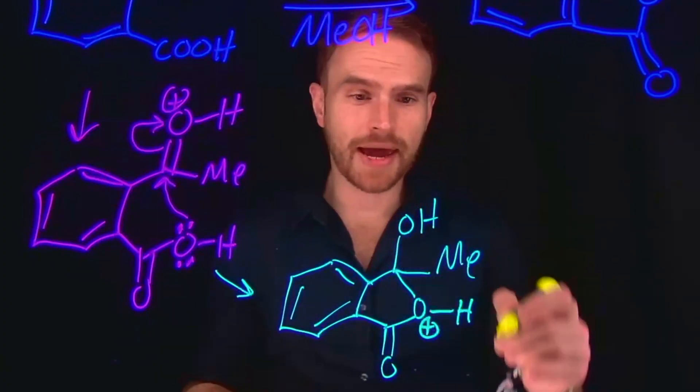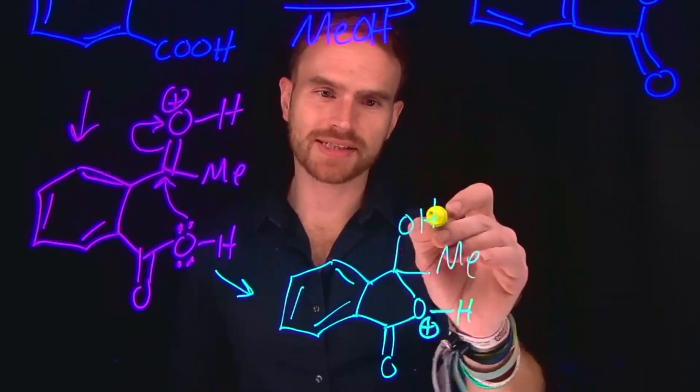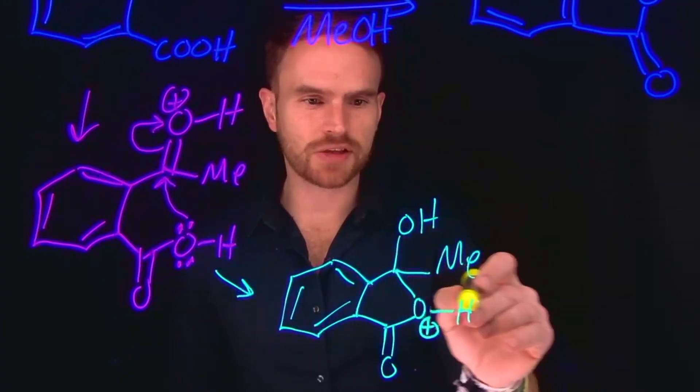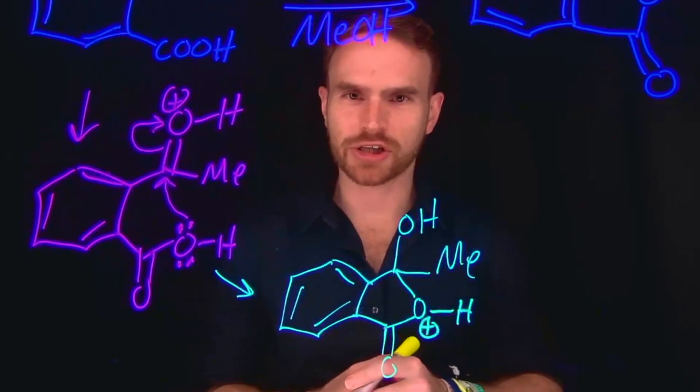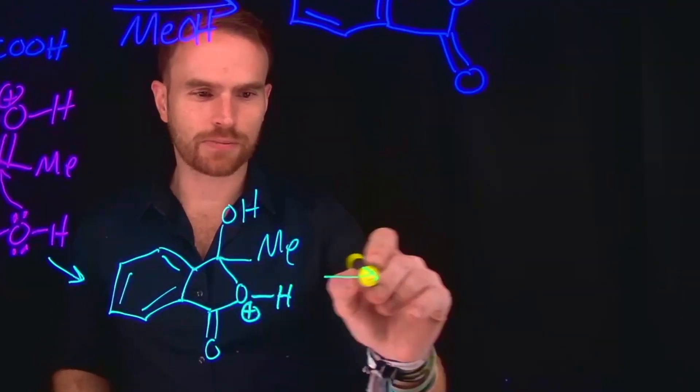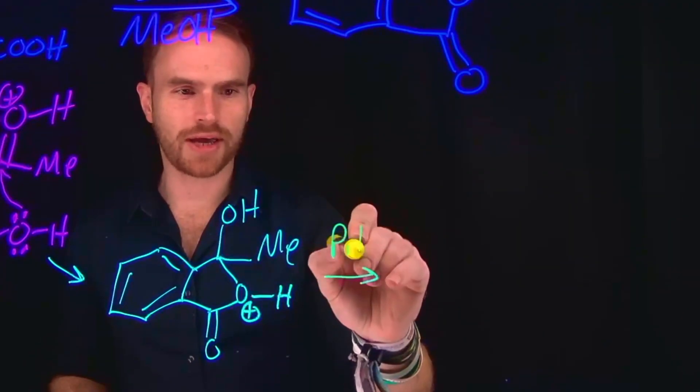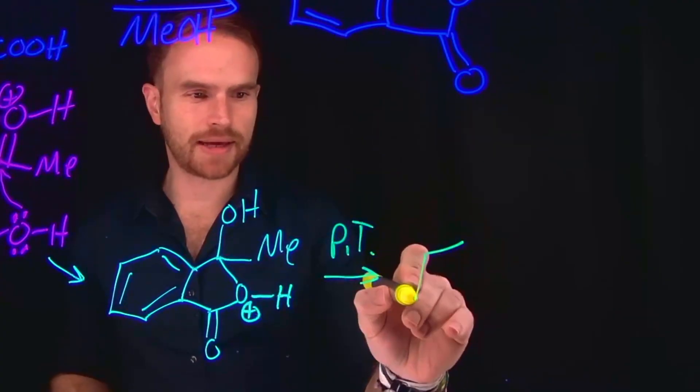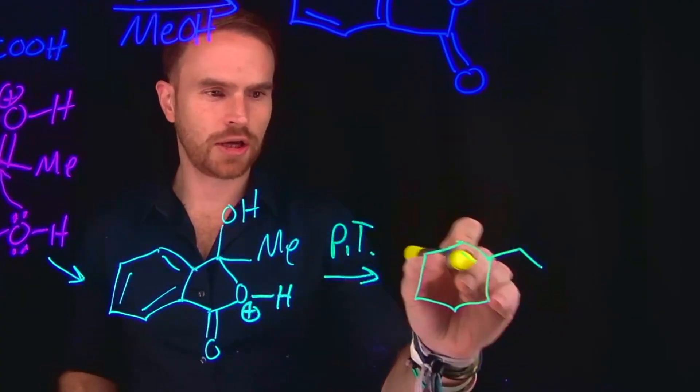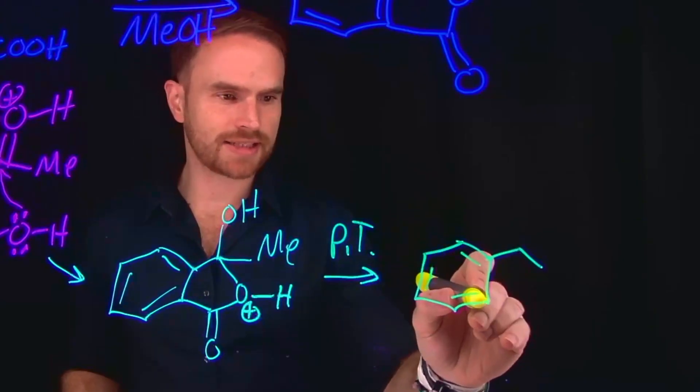So what will happen next is actually going to be a proton transfer between this hydroxyl group and this OH, which has a positively charged oxygen. So that intramolecular proton transfer, which I'll just write as PT, ends up making the other oxygen positively charged, which is how we end up with our next step, which is going to result in removing one of those groups.